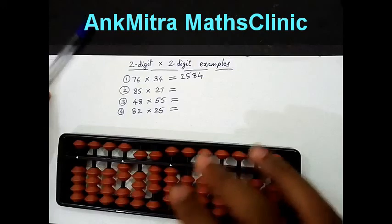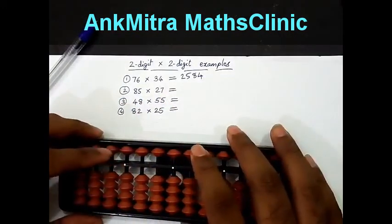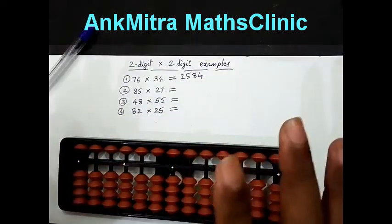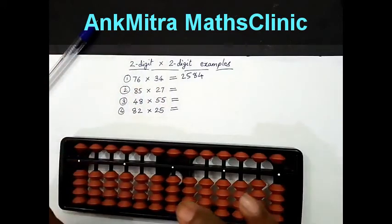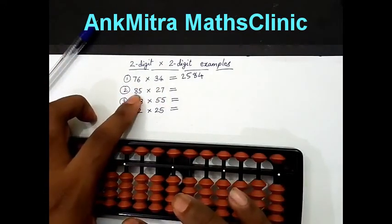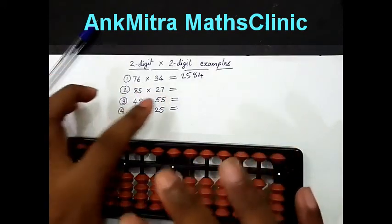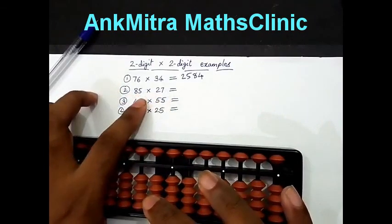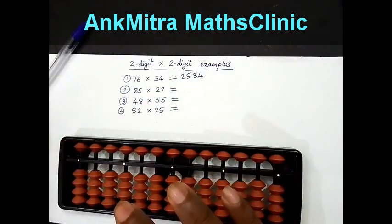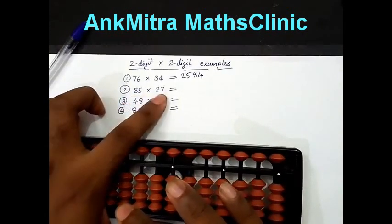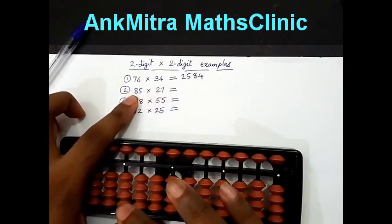Now, moving to the next example. Again, here I have to take one of the two numbers entirely. We can take any number as we want. It need not be the second number always, whichever is comfortable to us. I can do 85 entirely and multiply it with 2 and 85 multiplied by 7, or I can do 27 multiplied by 8 and 27 multiplied by 5 separately. Anyway, the answer will be the same in both cases. In this case, I will do 27 entirely.